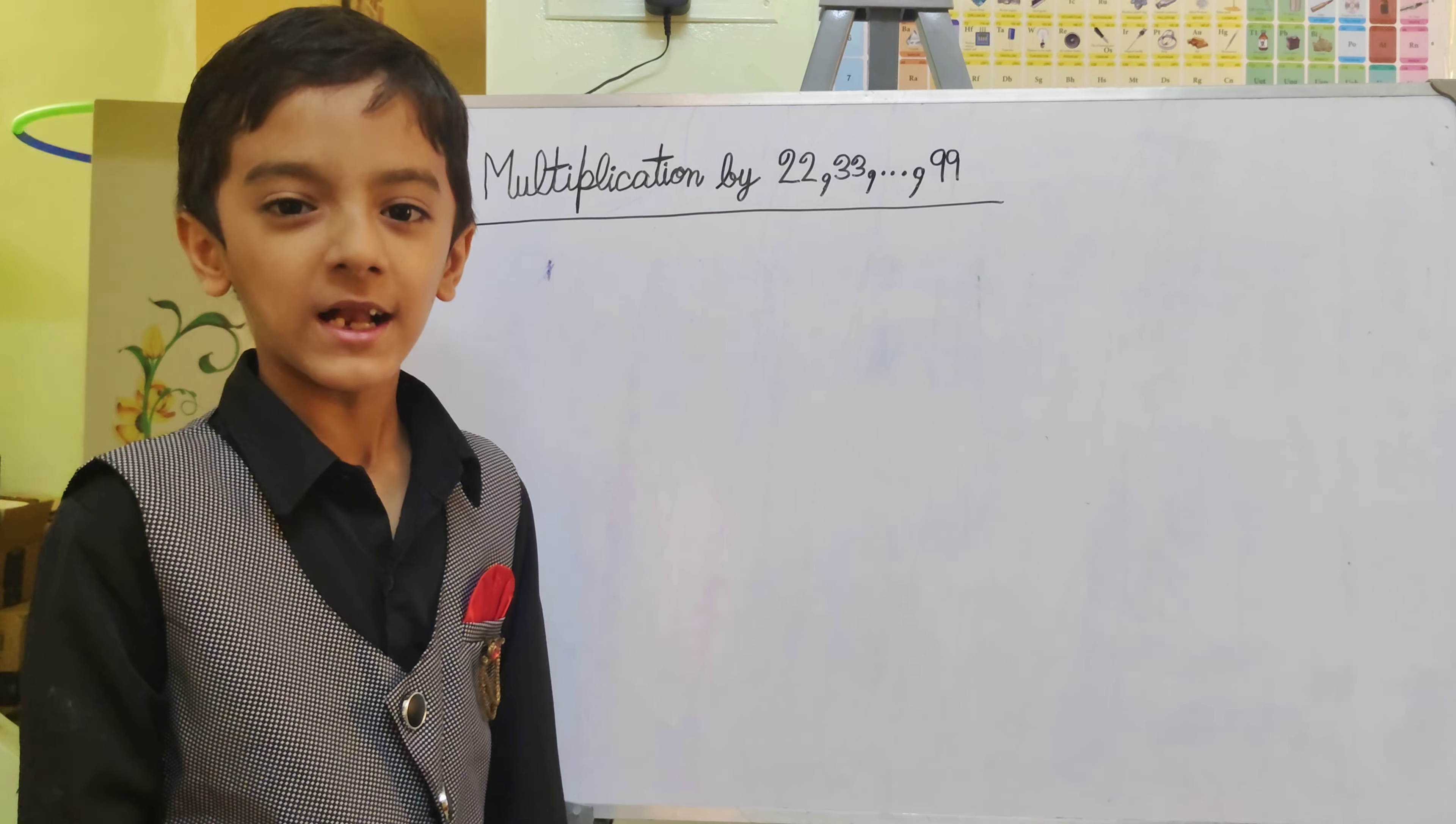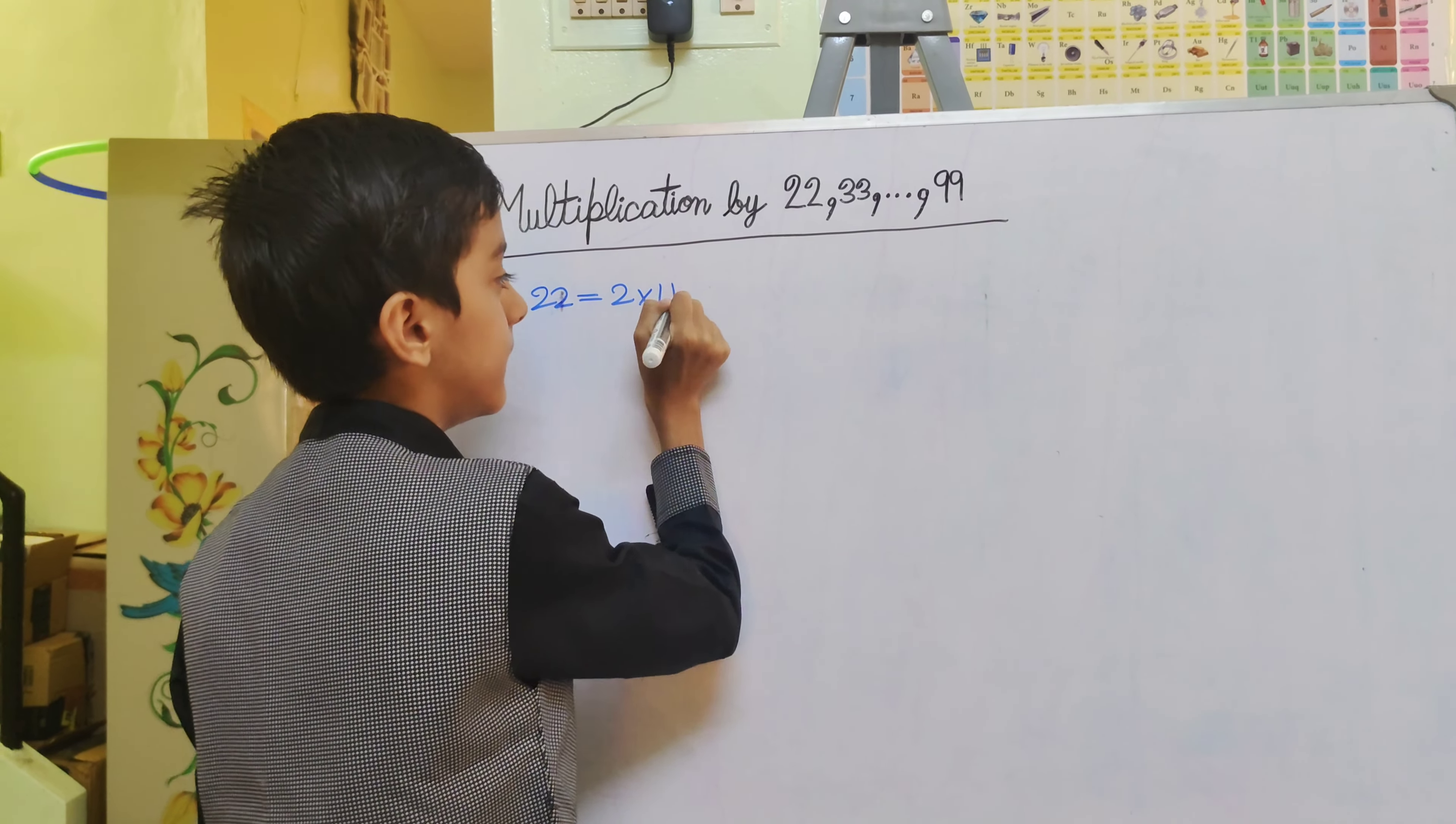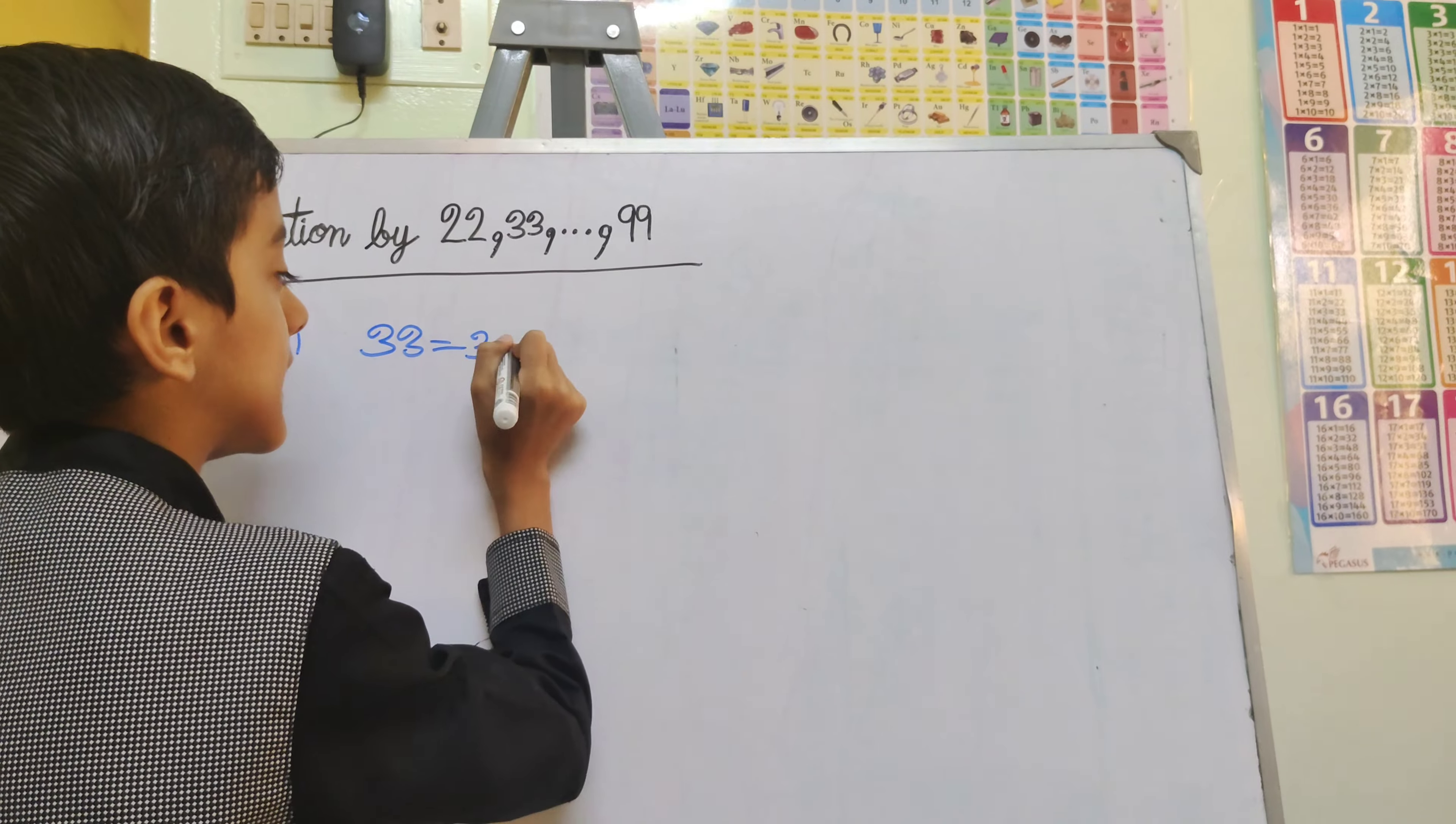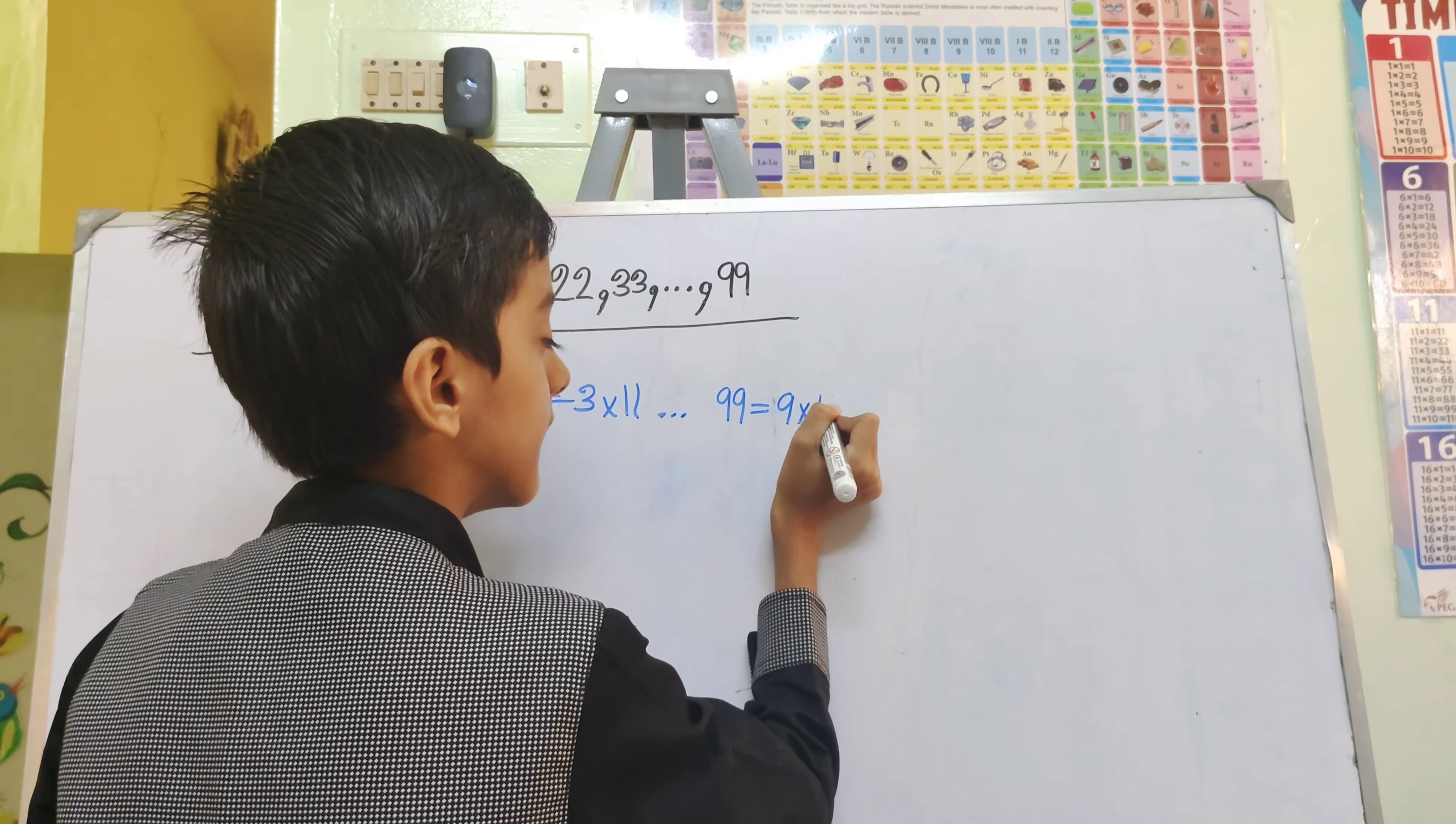We'll use the concept of multiplication by 11. As we can write 22 as 2 multiply 11, 33 as 3 multiply 11 and so on, 99 as 9 multiply 11.